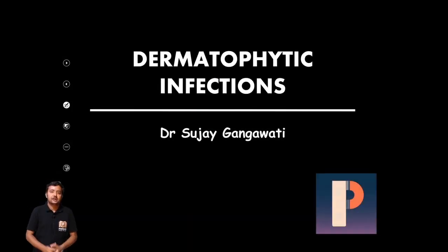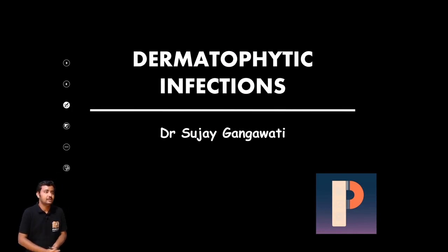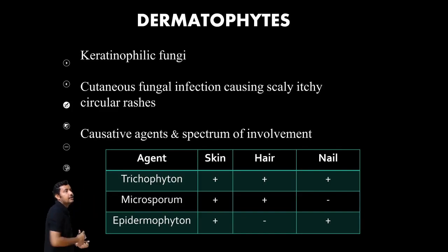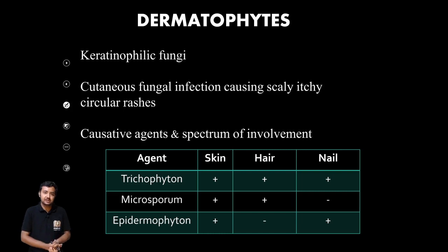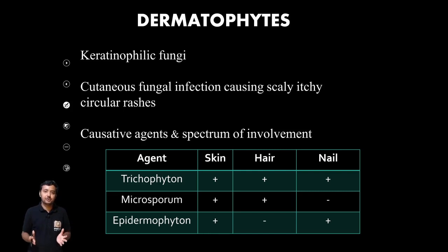Hello students, the topic for today is dermatophytic infections. Dermatophytes are mainly hyphal or mold-like fungi, and they come under Ascomycetes because they have ascospores as their sexual spores. The common asexual spore is the conidiospore, while the sexual spore is the ascospore.